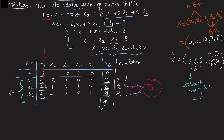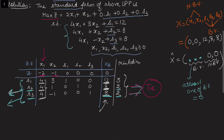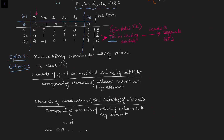Because there is a tie between s2 and s3, one will leave with a non-zero quantity and the other will result in a zero value in the next table. If s2 leaves, then s3 will take value 0 in the next table; if s3 leaves, then s2 will be 0. This is why we say a basic variable coming out to be 0 gives a degenerate basic feasible solution. The tie will lead us to a degenerate BFS, but either choice will still lead to the optimal solution.